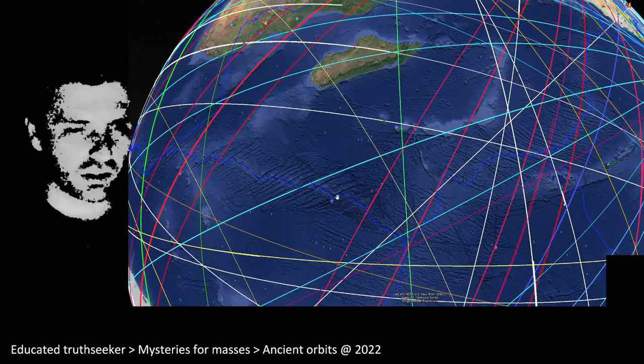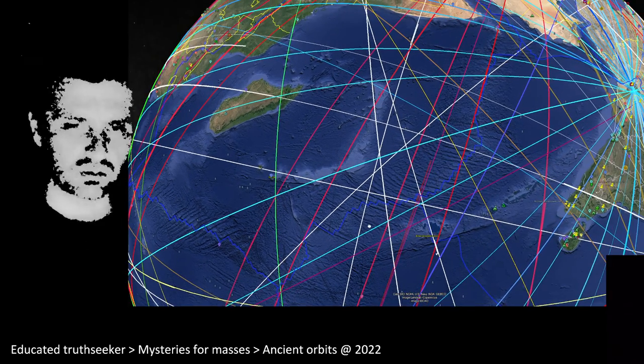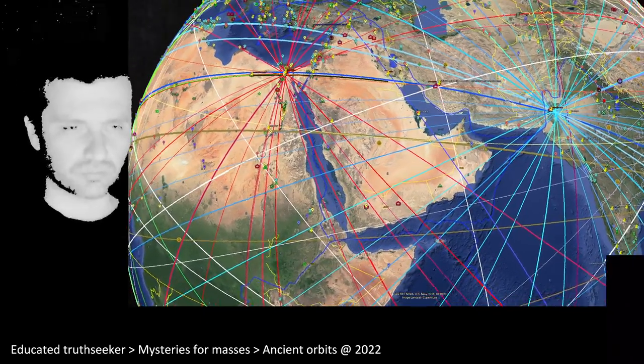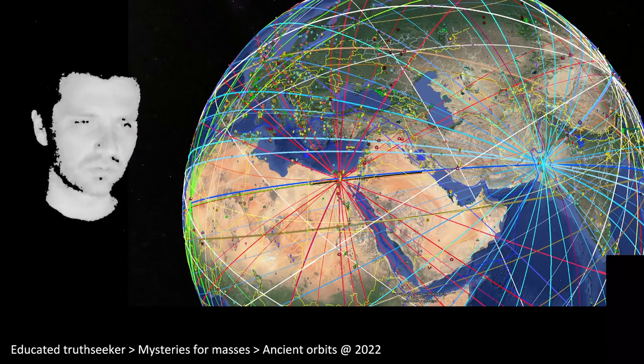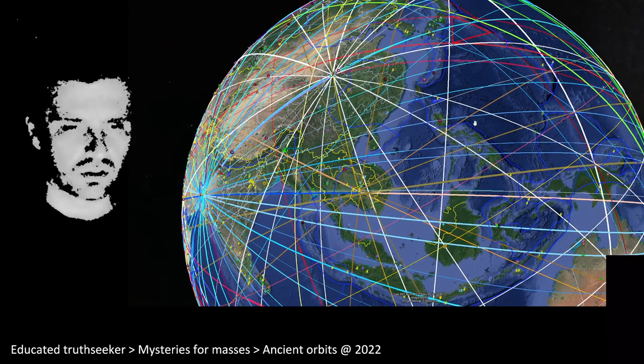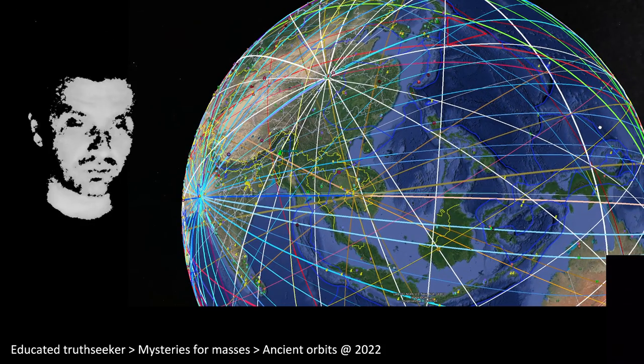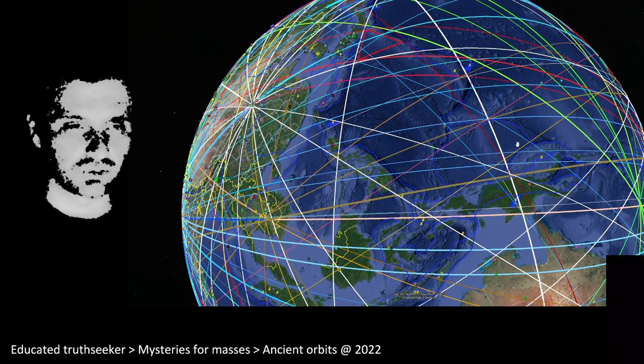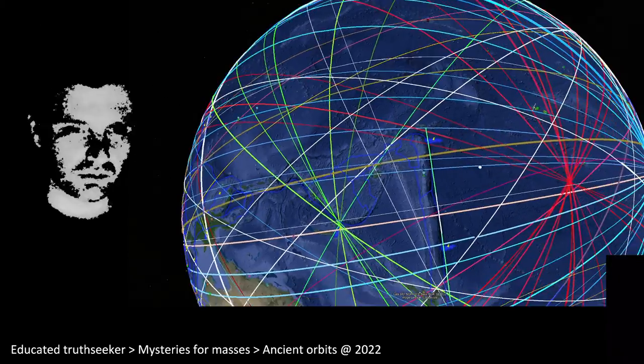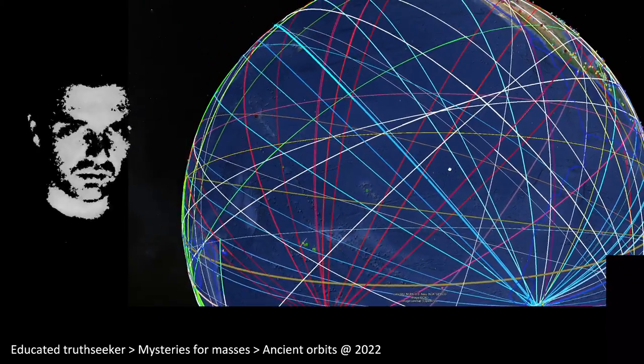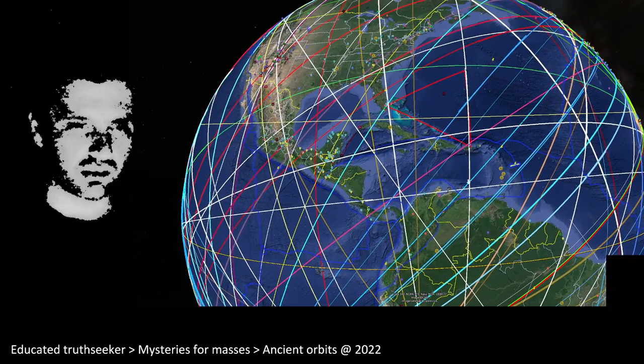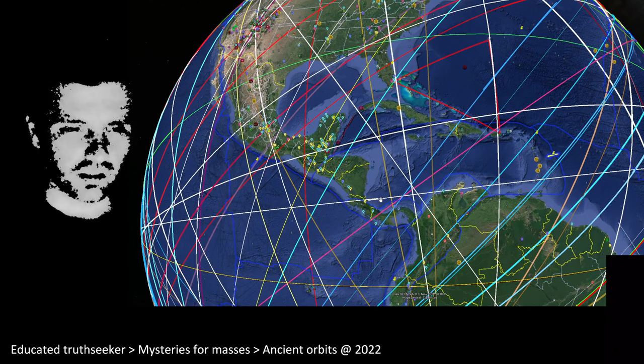This blue tectonic line is showing tectonic plates. So what is the chance of these lines being coincidental? They are going through many, many, many megalithical sites. Tikal.